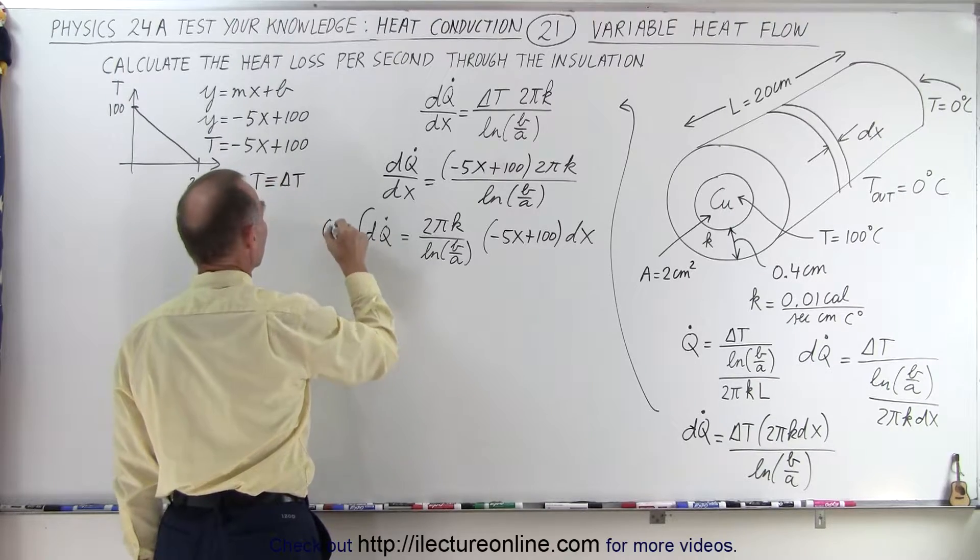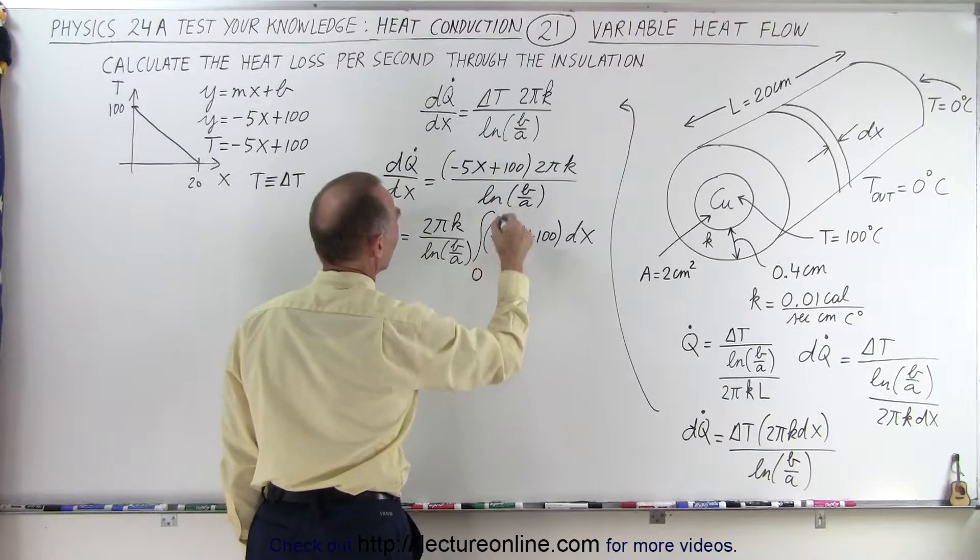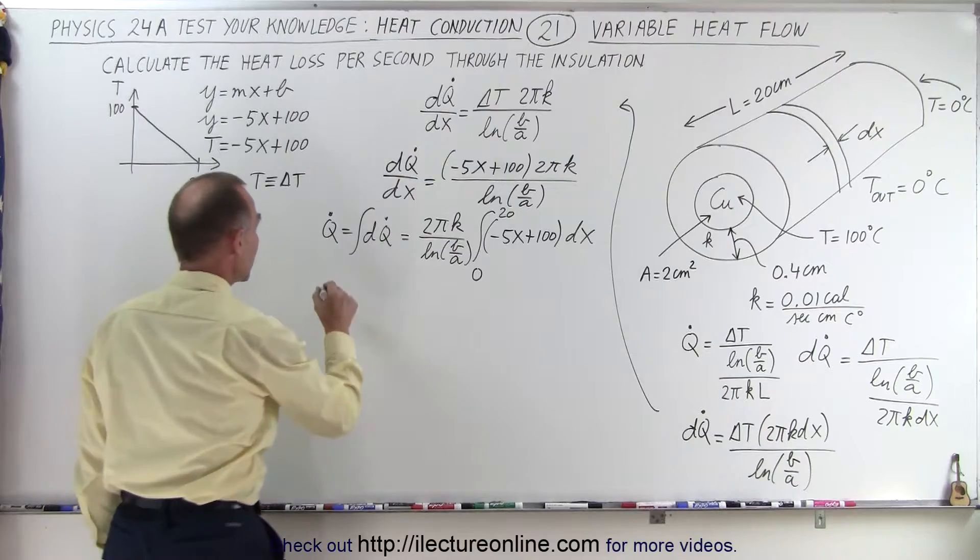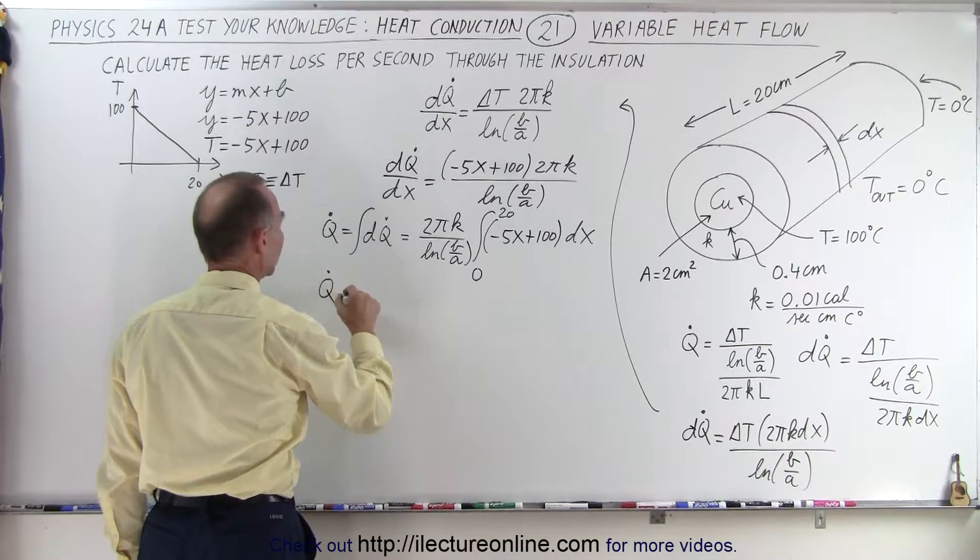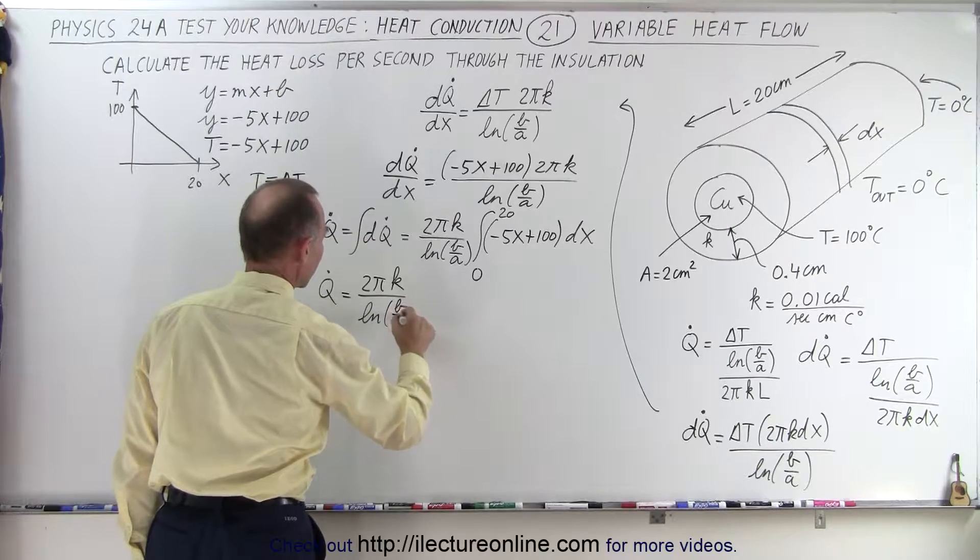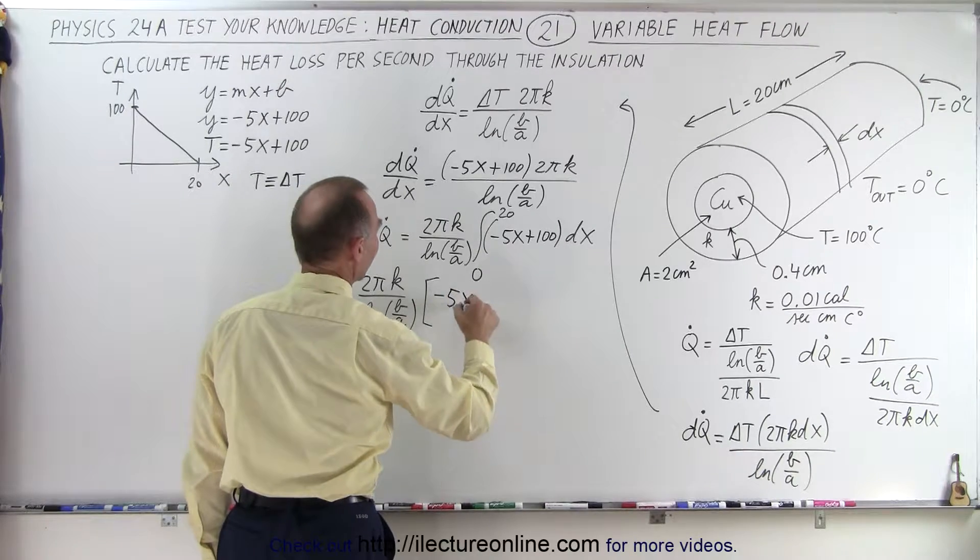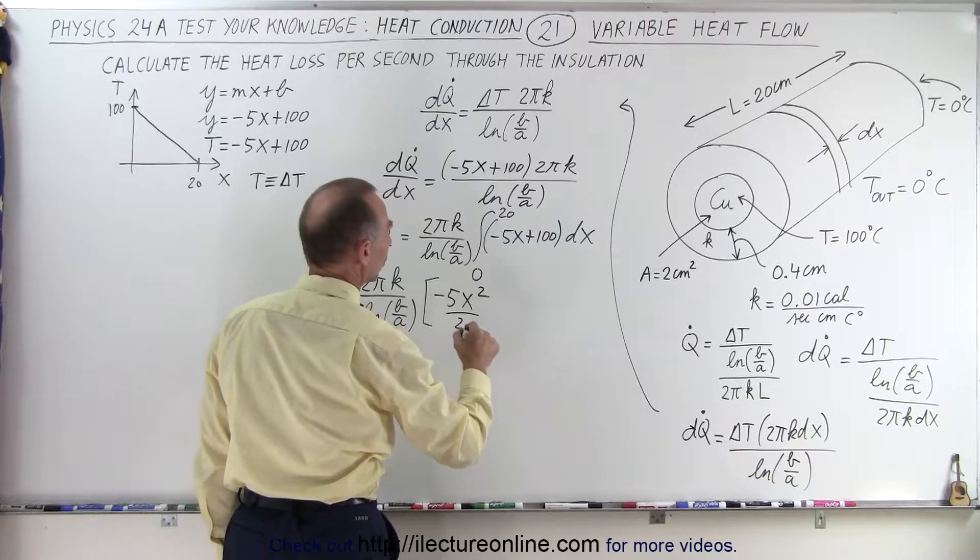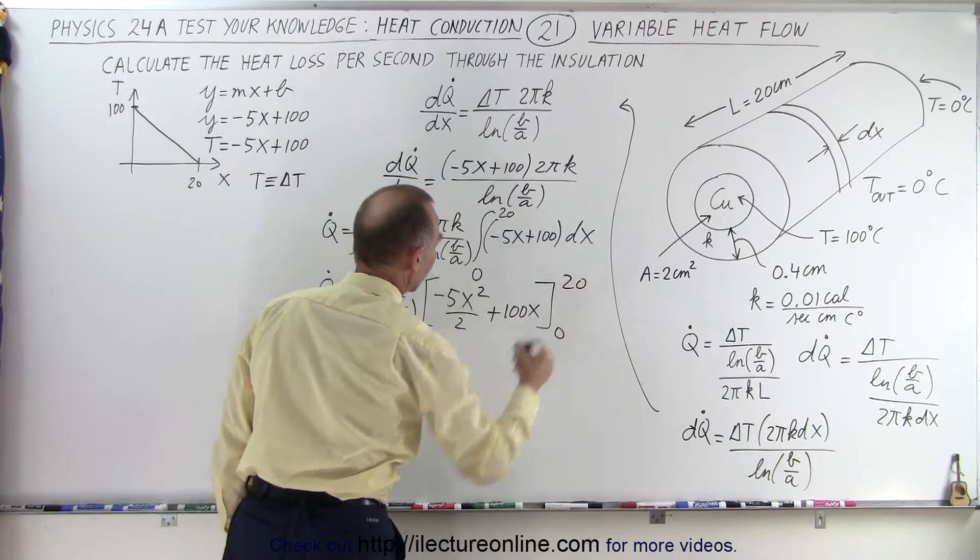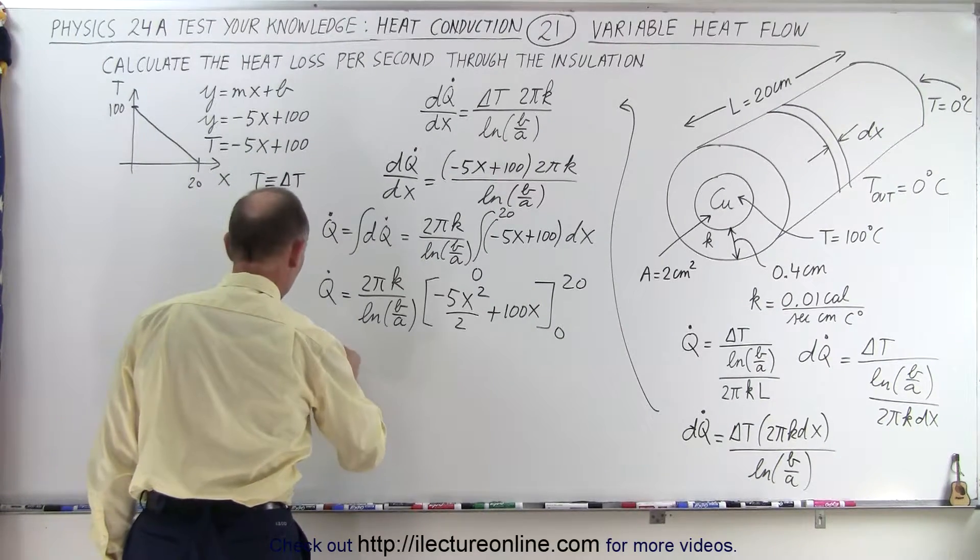So the integral of the left side is going to be Q̇, the total Q̇. And on the right side, we're going to integrate from 0 to 20 because that's the length of the bar. Which means that Q̇ is equal to 2πK divided by the natural log of B over A times minus 5X squared over 2 plus 100X, evaluated from 0 to 20. Now notice, when we plug in the lower limits, we get nothing. When we plug in the upper limits, we get the following.